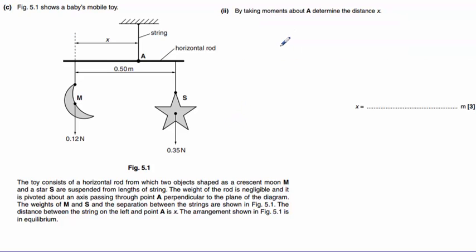Part two asks us to take moments around A in order to determine this distance x. So in order to take moments, we will always do clockwise moments equal to anticlockwise moments. So let's look at which of these objects is causing a clockwise moment. Well, this star here, S,